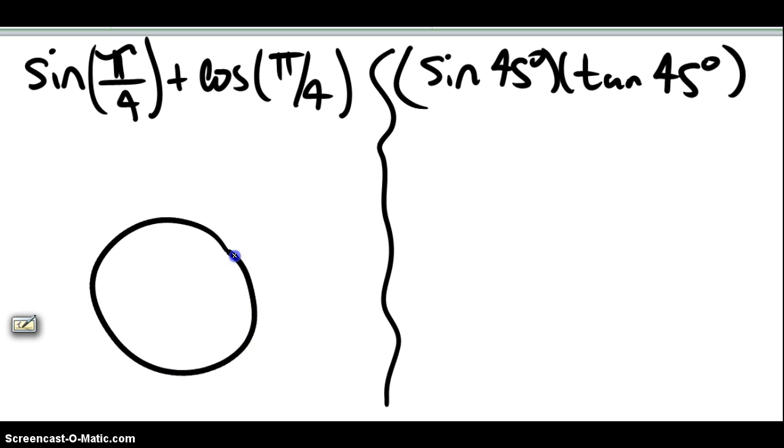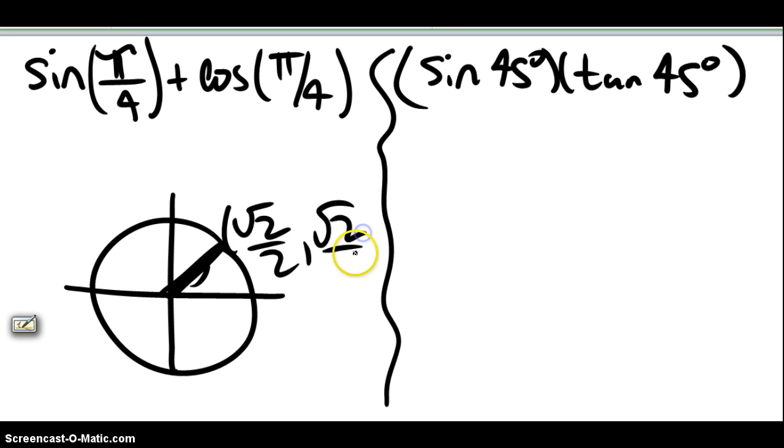So if this is my unit circle, then pi over 4 is right here at a 45 degree angle. So again, you should know that that's square root of 2 over 2, square root of 2 over 2.